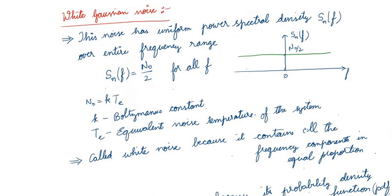What is white Gaussian noise? White Gaussian noise has the property of uniform power spectral density. This means that for all frequencies, the power spectral density is constant.